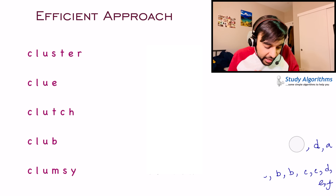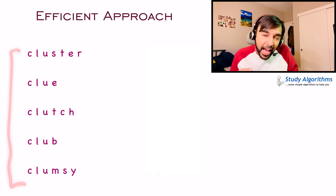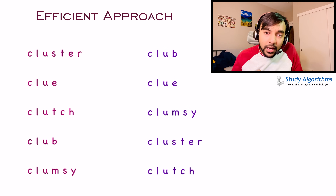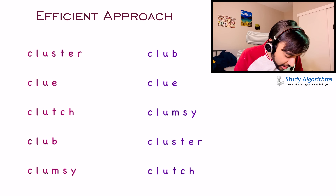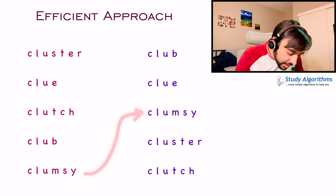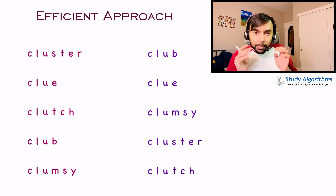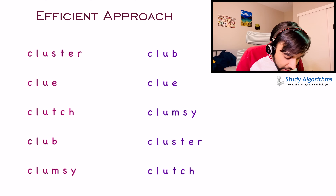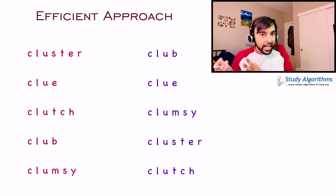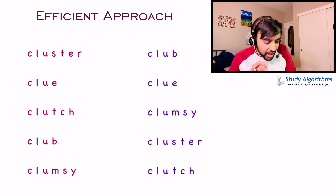You have this array of strings — let us try to sort it and see where we get. What will happen when I sort it? The word 'club' will go at the top, 'clue' will be the second word, then 'clumsy', then 'cluster', and then ultimately 'clutch'. You see that the prefix CLU is common everywhere, and then all these words will be sorted alphabetically.